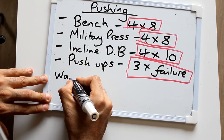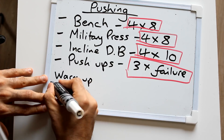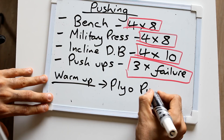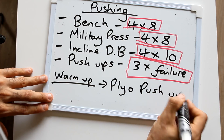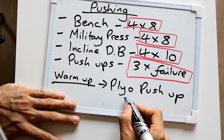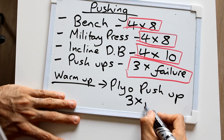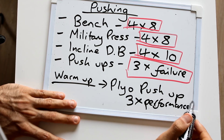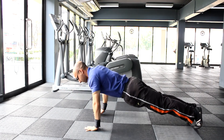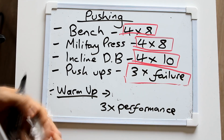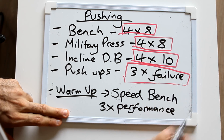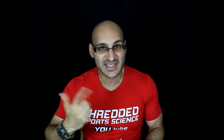These speed exercises can be very simple. You want to match them to the movement you are doing that day. If you are training chest, putting some plyometric push-ups in your warm-up is a ballistic exercise which will overload the nervous system and prepare it for that session. Another example is the speed bench — you can go Louie Simmons style here, focusing on acceleration with a light to moderate weight.